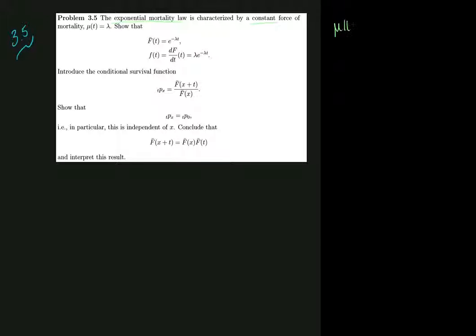The mortality μ(t) is equal to λ constantly, no matter what value t is. Of course, t should be greater than zero, but apart from that, it's just constant no matter where we're looking at on the positive axis.